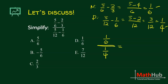Remember, class, that this is read as division. So what is the rule in dividing fractions? Division becomes multiplication and then get the reciprocal. So the answer is 2/3.